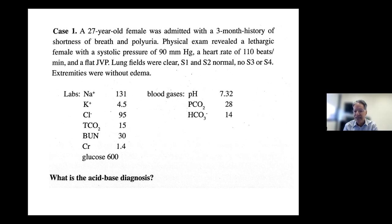Everything above the expected number is called a respiratory acidosis even if it's below 38 or 40, and everything below the expected is called a respiratory alkalosis. The expected — which we call just appropriate compensation — is not called a respiratory alkalosis even though it's below 40. So below 40 in a male, in the context of a metabolic acidosis, can be respiratory acidosis, normal compensation, or respiratory alkalosis depending on whether the pCO2 is what you expect.